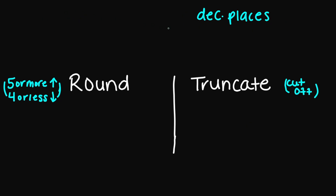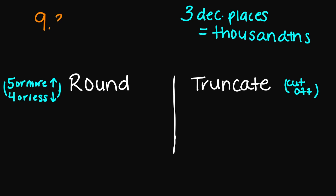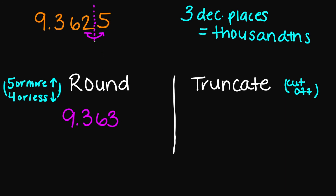Now let's try rounding and truncating to three decimal places. Three decimal places equals the thousandths place. Let's try 9.3625. Three decimal places puts us right here at the 2. If I look next door, I have a 5, so I'm rounding up — this 2 becomes a 3, giving 9.363. And if I truncate, I cut right between the 2 and the 5, so the answer is 9.362.